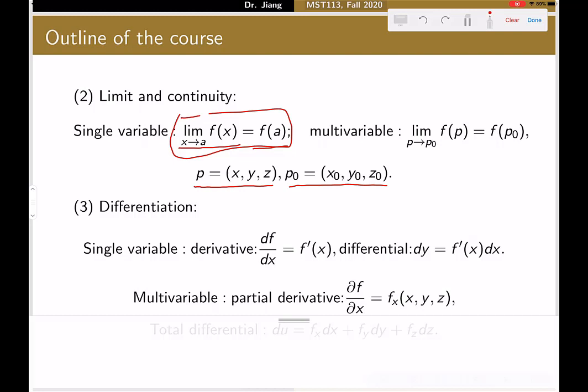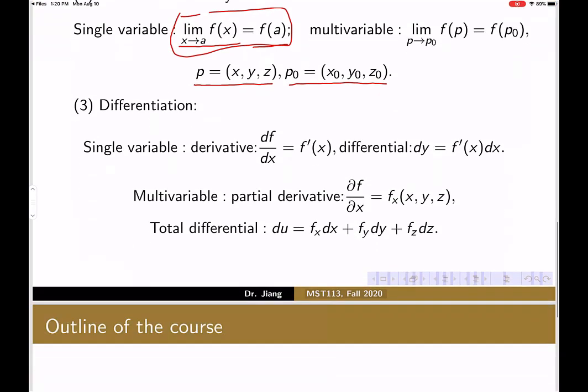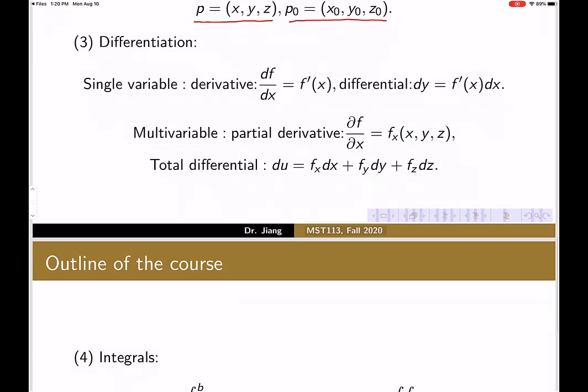After talking about the limit, the next concept is the derivative. In single variable case, the derivative is just a derivative with respect to one variable x, the independent variable. But now we have more than one dependent variable, or independent variable. So we have to talk about partial derivatives.